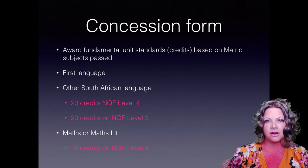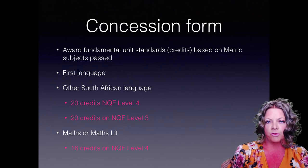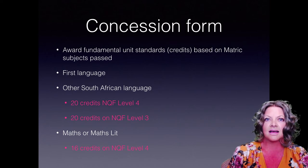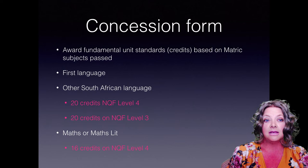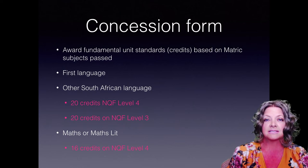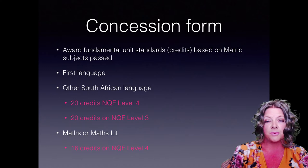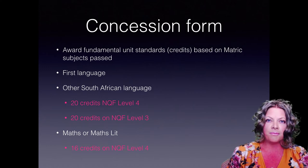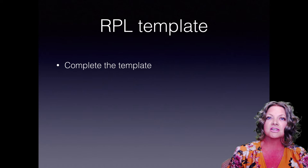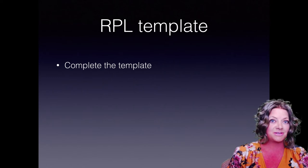Regarding the concession form — this is an INSETA document that you sign, which we complete to inform INSETA that you qualify for exemption from either the communication unit standards (40 credits or 20 of them) and/or maths, based on your matric certificate. Please note that only normal maths and maths literacy will be accepted; functional maths will not be accepted.